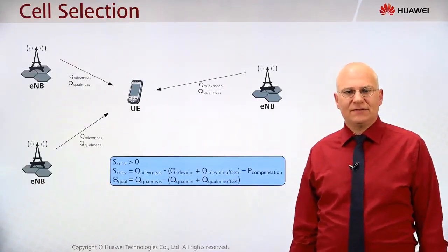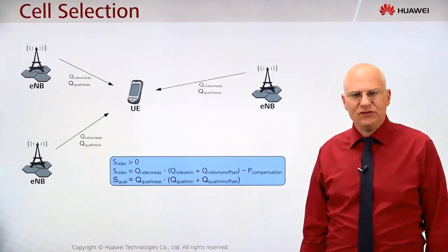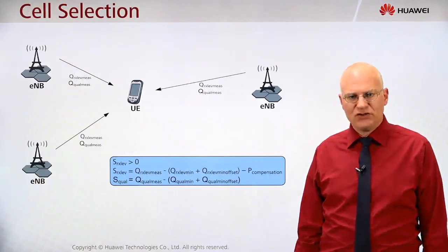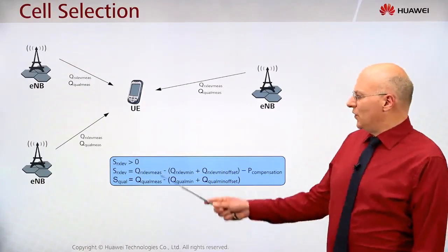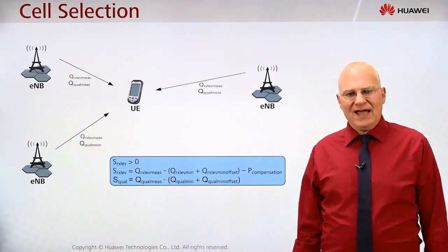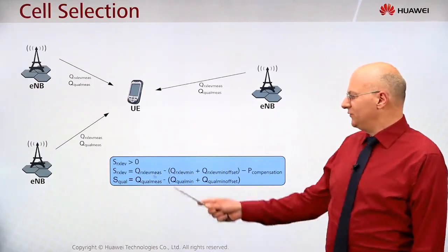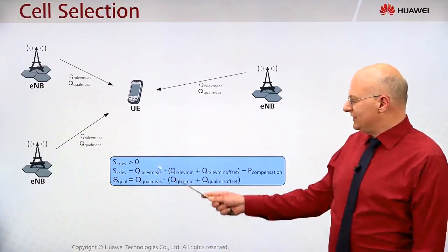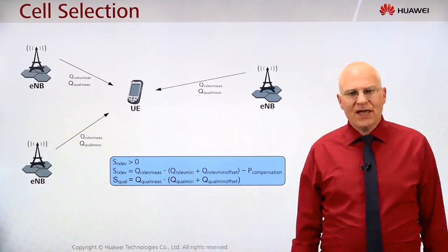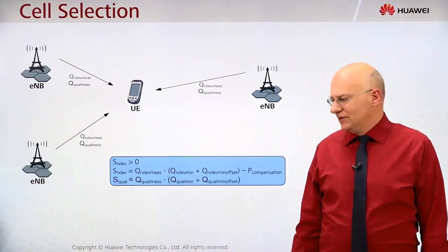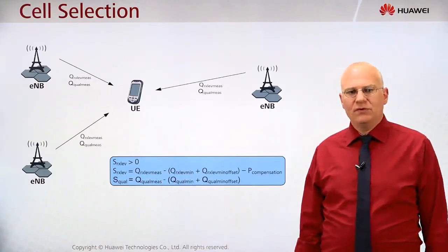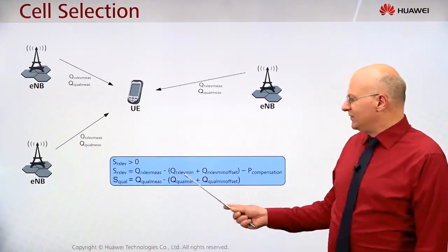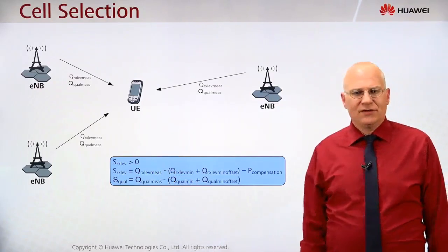The next step is the cell selection. The cell selection parameters are given in the system information, and for this we have the so-called S criteria which has to be fulfilled. The S is calculated from the receive level, and we subtract the minimum receive level which is accepted in the cell.